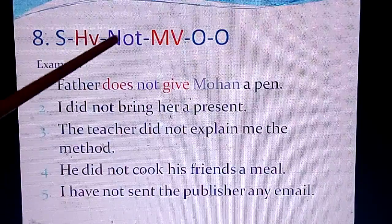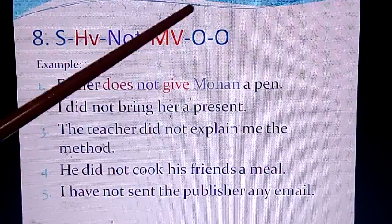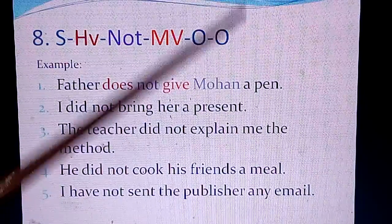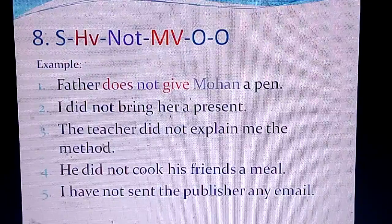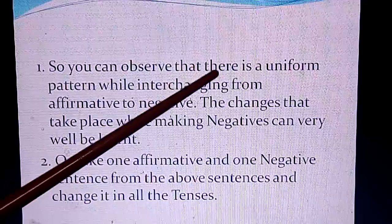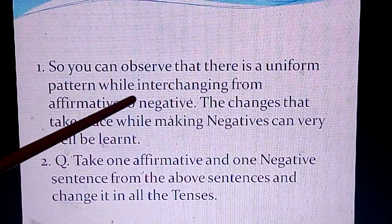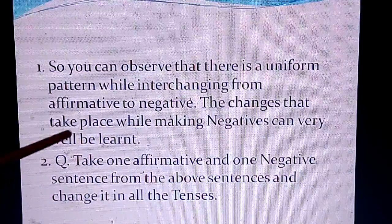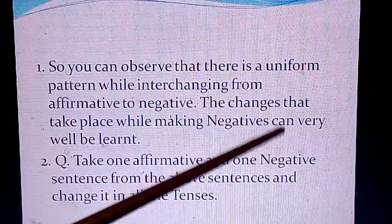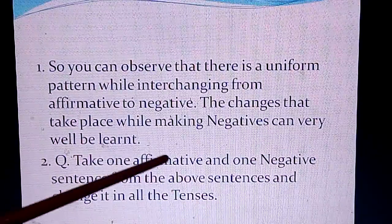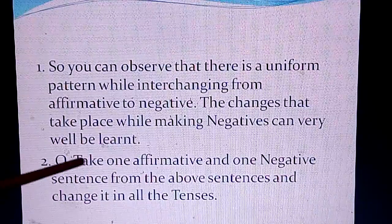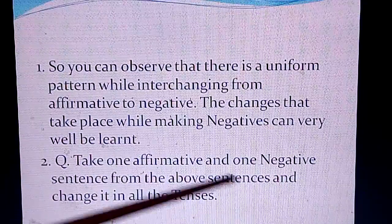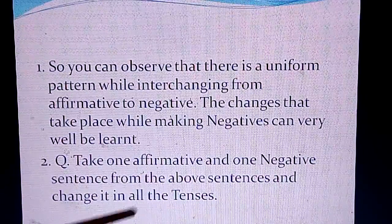'I have not sent the publisher any email' — 'any email' is the object. You can observe there is a uniform pattern when changing from affirmative to negative. The changes that take place while making negatives can be learned well by following these structures. As an exercise, take one affirmative and one negative sentence from the above and change it into all tenses.